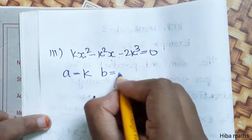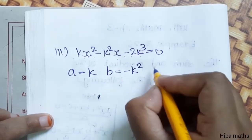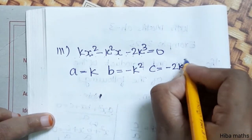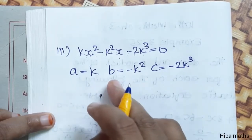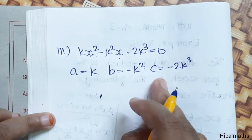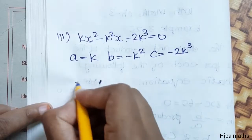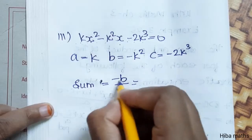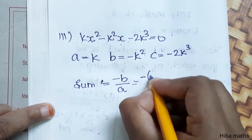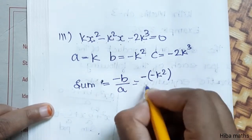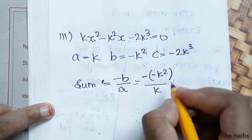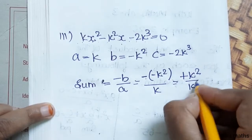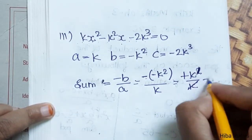Third question: k x square minus k square x minus 2 k cube is equal to 0. Here a value is k, b value is minus k square, c value is minus 2 k cube. Sum is minus b by a, that is minus of minus k square by k, which simplifies to k square by k, equals k.